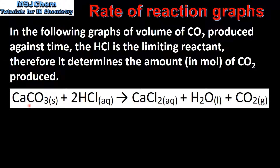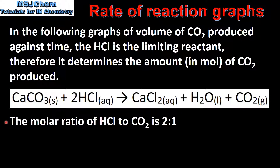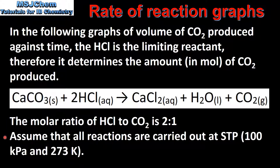Here we have the equation for the reaction. Calcium carbonate reacts with hydrochloric acid to produce calcium chloride, water and carbon dioxide gas. From the balanced equation we can see that the molar ratio of hydrochloric acid to carbon dioxide is 2 to 1. In this video we will assume that all reactions are carried out at STP.